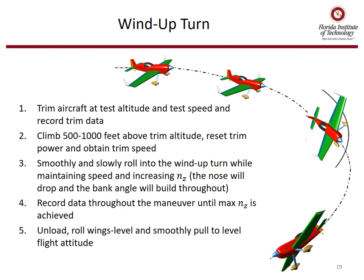The third method is the wind-up turn. Trim the aircraft at test altitude and speed and record trim data, then add some power, climb 500 to 1,000 feet above trim altitude, reset trim power, and obtain trim airspeed. Smoothly and slowly roll into the wind-up turn while maintaining speed and increasing NZ — the nose will drop and bank angle will build throughout the maneuver. Wind-up turns are designed to have continuous data recorded throughout, so a data acquisition system is preferred. Continue recording data until hitting maximum NZ, then unload, roll wings level, and smoothly pull to a level flight attitude.